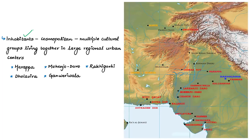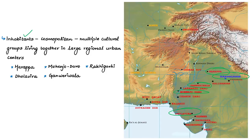The large regional urban centers of the IVC were found at Harappa, Mohenjo-daro, Rakhigarhi, Dholavira, and Ganweriwala. Harappa is an archaeological site in present-day Pakistani Punjab; Mohenjo-daro is in Sindh province of Pakistan; Rakhigarhi is in Haryana, India; Dholavira is in the Kutch area of Gujarat; and Ganweriwala is located in the Cholistan Desert in Pakistan, adjacent to the Indian Thar Desert.